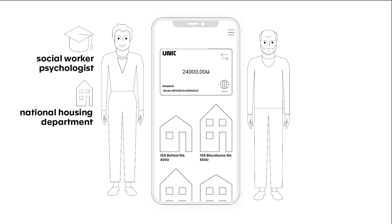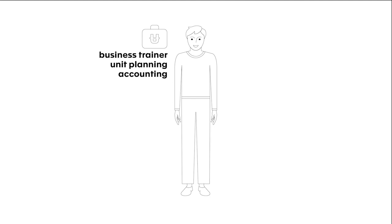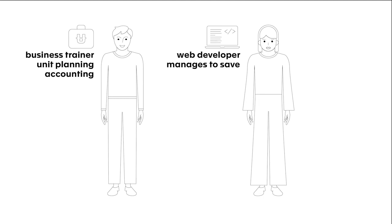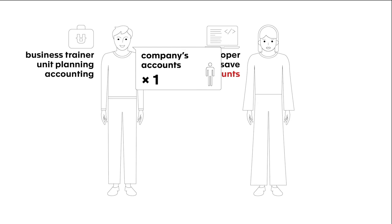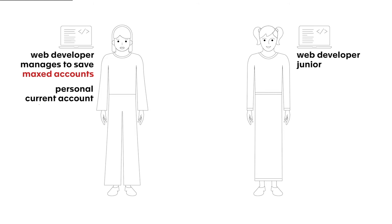Now let's meet Manu. He works as a business trainer helping sole traders and companies integrate UNIT into their accounting and financial planning. One of Manu's clients is Lee, a full-stack developer working as a sole trader. Her highly skilled work and steady income allowed her to reach the maximum amount in her savings account, so she sought out Manu's expertise. Manu informed Lee that if she were to find a co-worker, the company's savings account would increase so they could accumulate more money. So Lee hired Khadija. Alone, Lee was limited to personal and company accounts. With Khadija, their company accounts doubled, and if they reach the new limit, they can always hire more people.